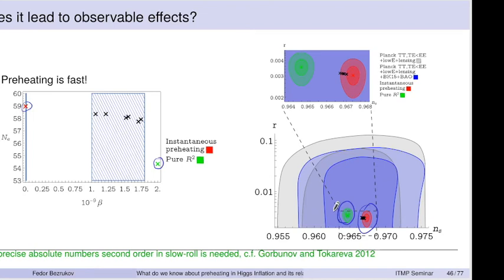To distinguish between these models, it's actually much better to look at n_s rather than r. This is good because a precise n_s measurement will probably happen through 21-centimeter observations, where you can measure it really, really nicely.